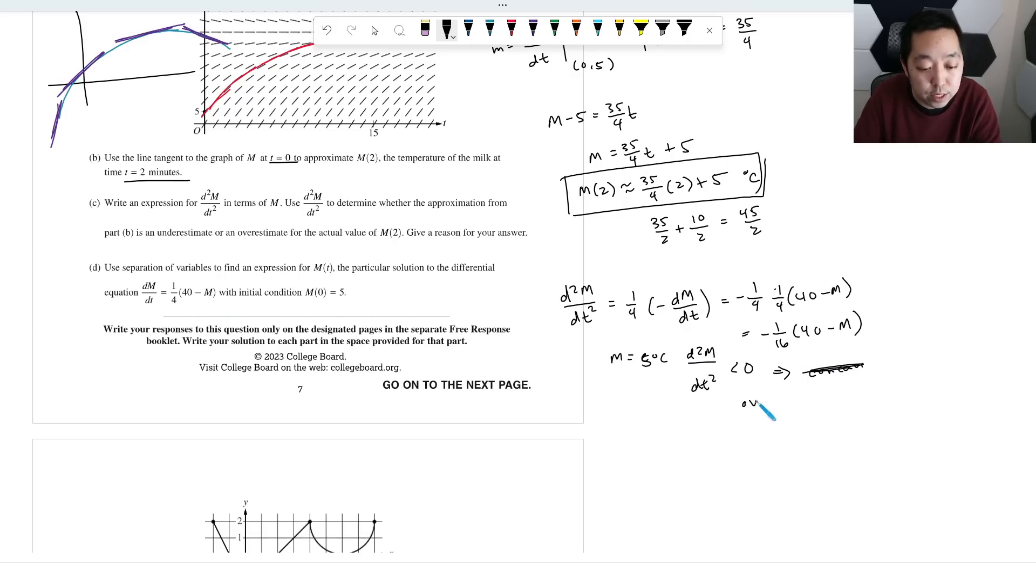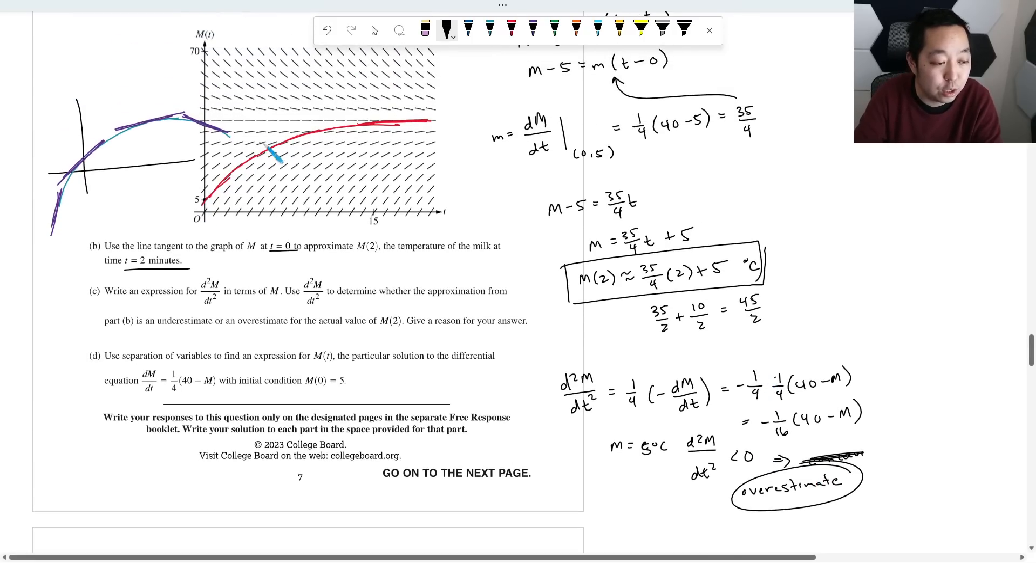Or you don't even have to say concave down. That implies that this is going to be an overestimate and you can almost see it. Like they gave you the solution curve. It's nice here. You can kind of see the tangent line right here is going to overestimate the temperature. It's going to be a larger value than the actual solution curve, right? So that's going to be an overestimate there.